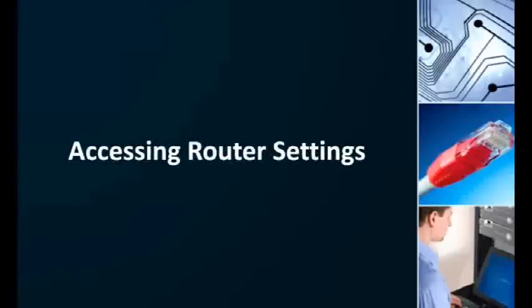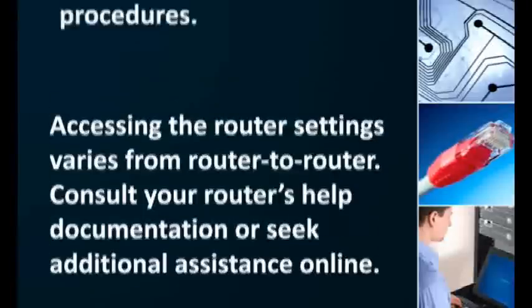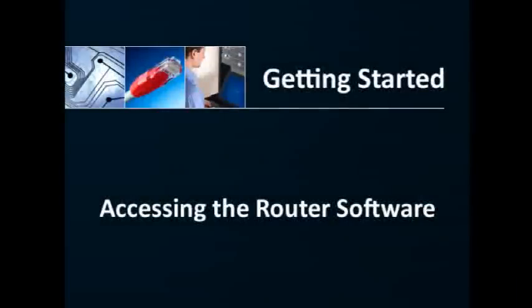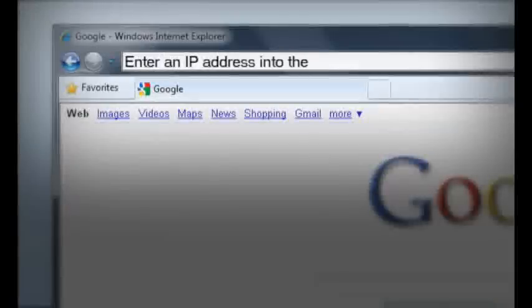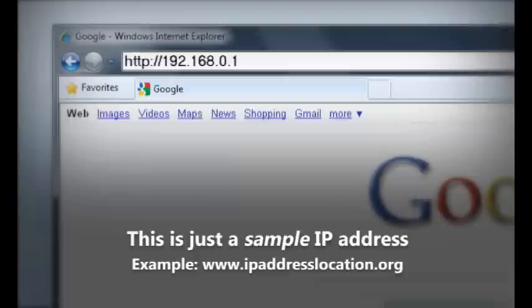Next, you'll need to log into your router and access the settings. This process is different for every router, so you will need to find your router's help documentation and read how to do this and how to forward ports. One way to access your router's settings is to enter the router's internal IP address into a browser. Find the default IP address in your router's help documentation, or try searching your router's model number online. There are online resources that list the default IPs of various routers, or you might find your router has decent documentation available online.